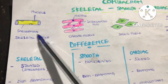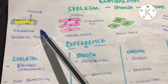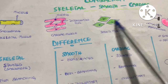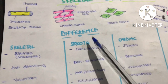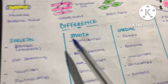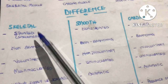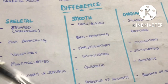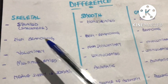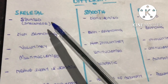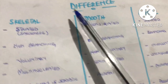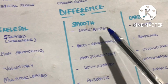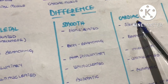This is the structure of skeletal muscle, this is the structure of cardiac muscle, and this is the structure of smooth muscle. The skeletal muscle is striated due to the arrangement of the myofilaments, which give it a striation appearance. The smooth muscle is not striated.